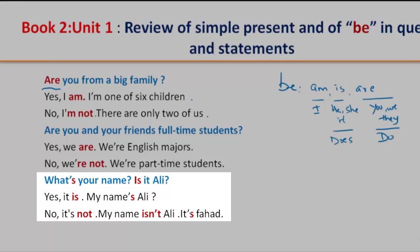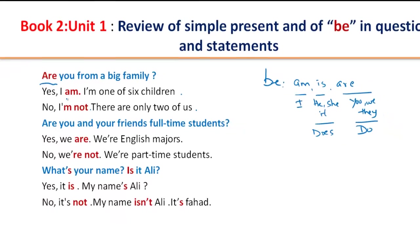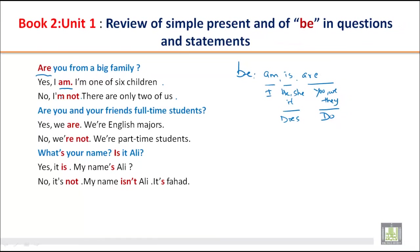So you can see the usage of verb B in all the sentences. Yes, I am. As you remember that we use AM only with I. Are you and your friends full time students? Yes, we are. So with plurals we use ARE. No, we are not. We are part time students. What's your name?